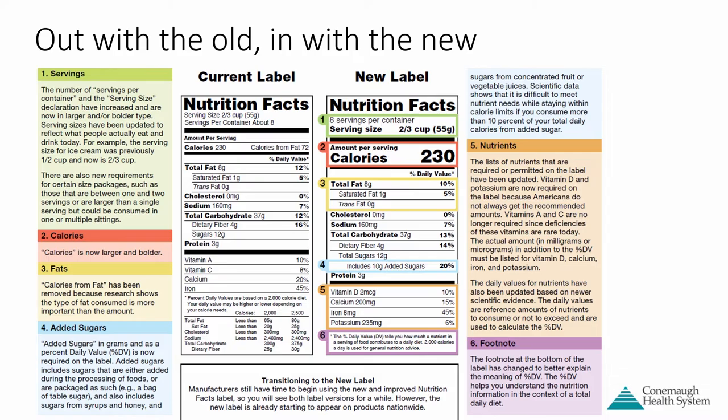The big difference with the new food label is what's emphasized. The serving size is larger and in bold print so it's easier to see. The calories are the largest element on that label because that's what we want you to pay the most attention to. It makes it a lot easier at a quick glance to locate the nutrients in your foods for comparison's sake, so you can better make a healthier choice.